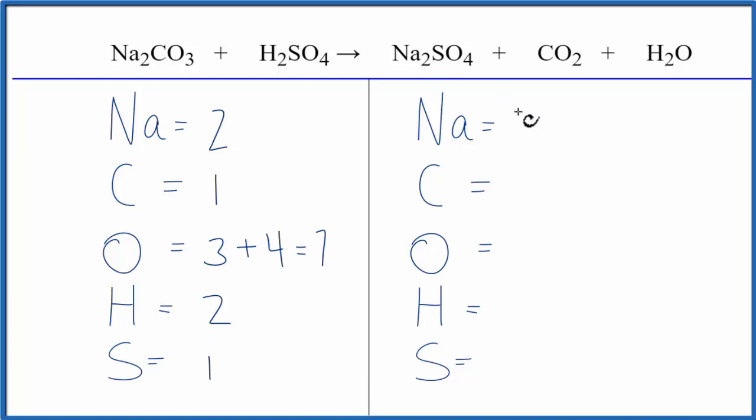On the product side, two sodiums, one carbon, oxygens we have four plus two plus one so that's seven oxygens, hydrogens two, and one sulfur.